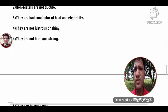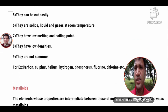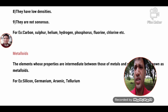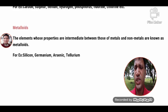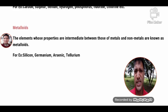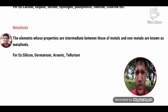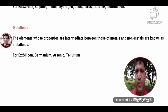Now we will see metalloids. Metalloids are elements which have properties between metals and non-metals — they show properties of both metals and non-metals.